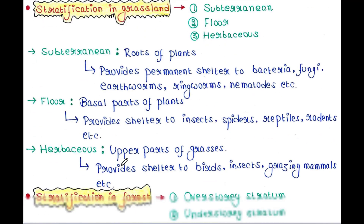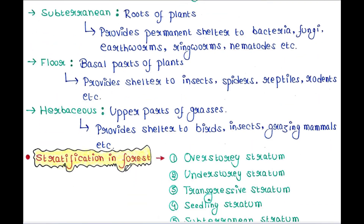Next is the herbaceous layer. Herbaceous refers to the upper parts of grasses. It provides shelter to birds, insects, grazing mammals, etc. Next we will talk about stratification in forest.